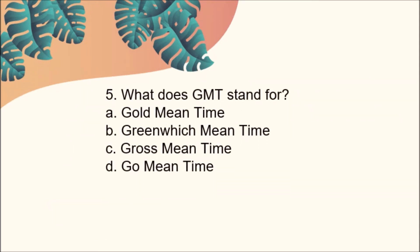Number five: What does GMT stand for? A, Gold Meantime; B, Greenish Meantime; C, Gross Meantime; D, Go Meantime. The answer is Letter B, Greenwich Mean Time.